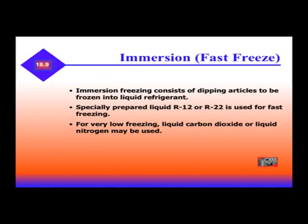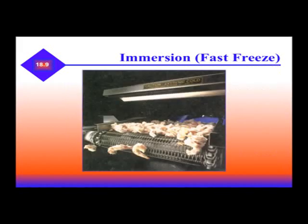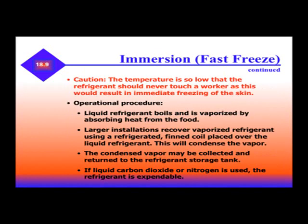Immersion freezing is considered fast-freeze freezing. It consists of dipping articles to be frozen into a liquid refrigerant. Specially prepared liquid R12 or R22 is used for fast freezing. The temperature is so low that this refrigerant should never touch a worker, as this would result in immediate freezing of the skin. Liquid refrigerant boils and is vaporized by absorbing heat from the food. Larger installations recover the vaporized refrigerant using a refrigerated fin coil placed on the liquid refrigerant, which will condense the vapor. The condensed vapor may be collected and returned to the refrigerant storage tank.